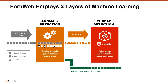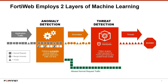Updates to these models are included as part of the FortiGuard WAF security service to provide protection from new threats that require model retraining and testing. If an anomaly is determined to be an attack, FortiWeb can take action such as logging, alerting, and blocking requests. Benign anomalies are allowed to proceed without interruption.